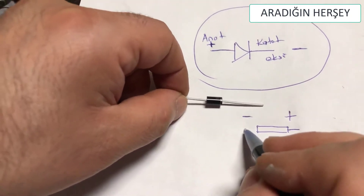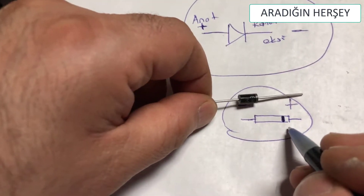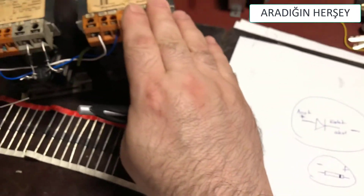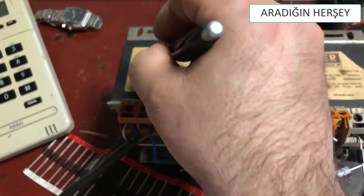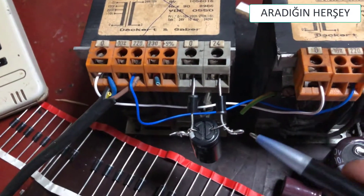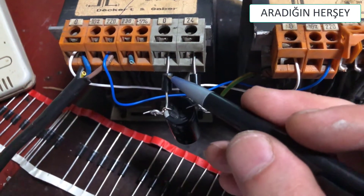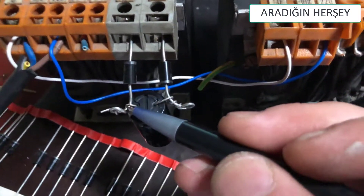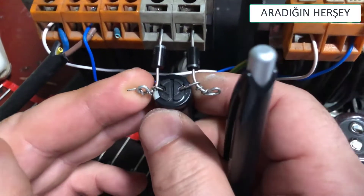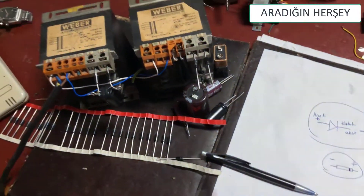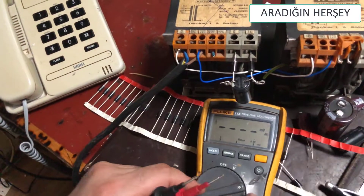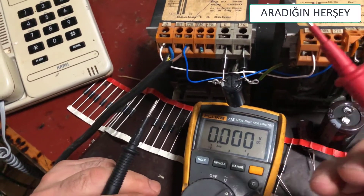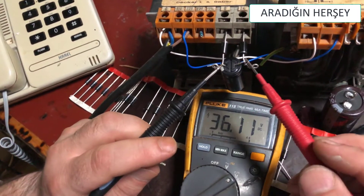Beyaz kısmı her zaman artıdır arkadaşlar; sizlere uygulamada kullanacağımız yöntem bu. Şimdi 24 voltluk bir AC tarafımız var. Diyotun beyazını, yani artısını, AC girişimizin artısına bağladık; artı artıya bağladık. Diyotun eksi kısmını da kondesatörün eksi kısmına bağladık ve 36 volt DC aldık.